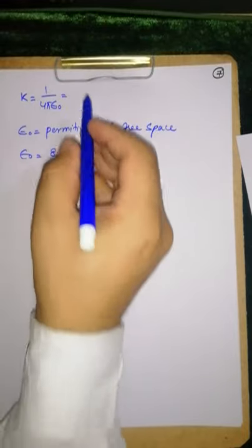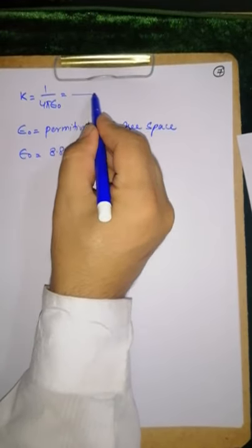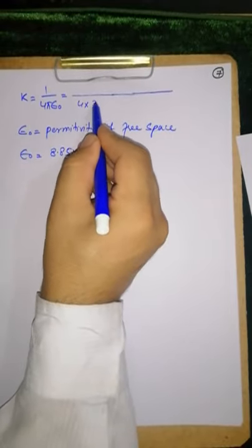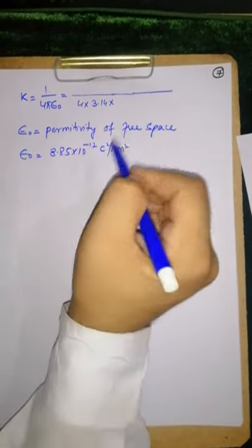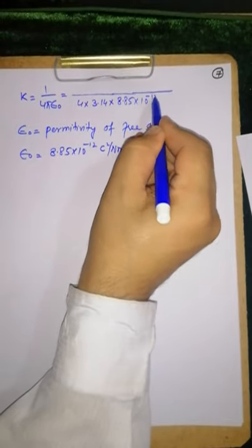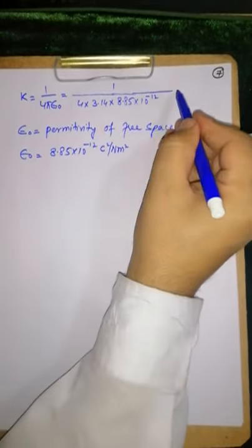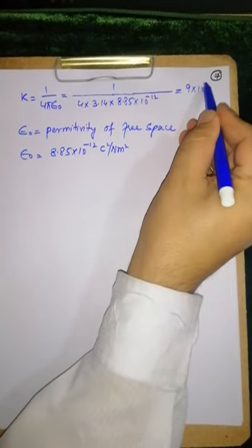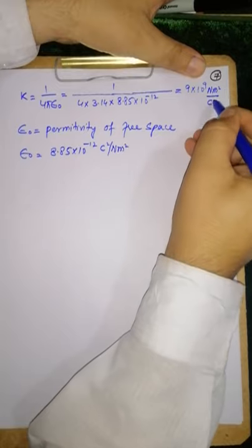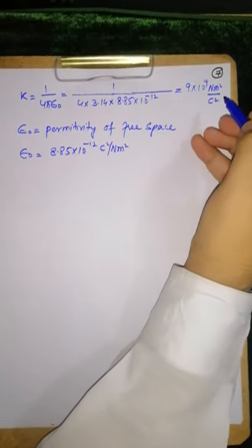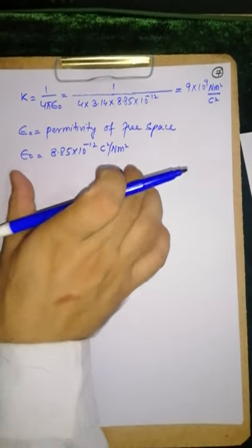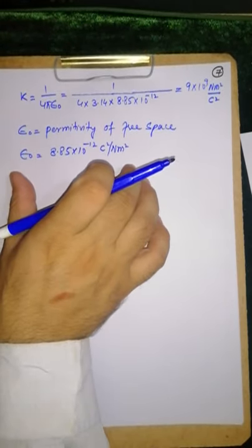The value of 4π times 3.14 times epsilon not which is 8.85 into 10 to the power minus 12 - when you divide, you get 9 into 10 to the power 9 newton meter square per coulomb square.